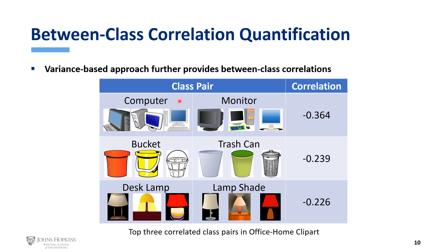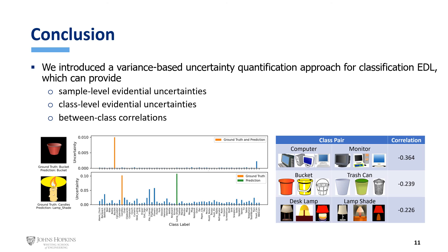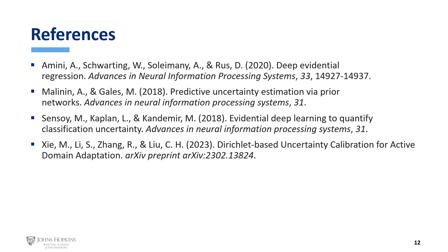For example, for this particular dataset, the model finds it hard to distinguish between computer and monitor, bucket and trash can, and desk lamp and lampshade. As a conclusion, in this paper we introduce the variance-based approach in evidential deep learning for classification uncertainty quantification. Compared to the traditional entropy-based approach, our method can not only provide sample-level evidential uncertainties, but also class-level uncertainties as well as the between-class correlations. These additional benefits might provide useful information for downstream applications. Thank you for watching.